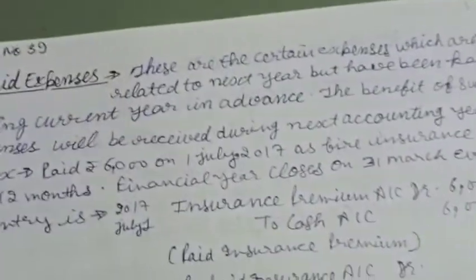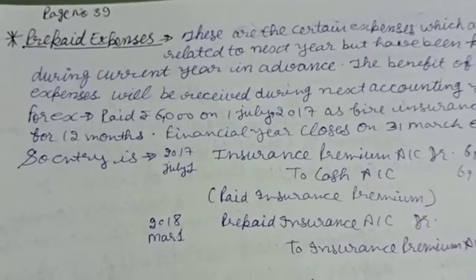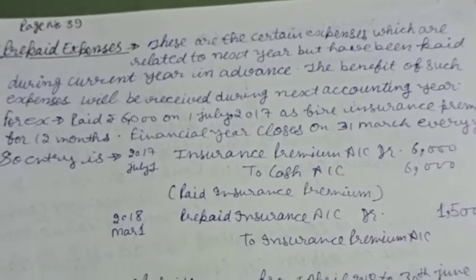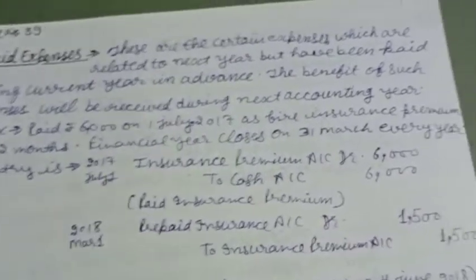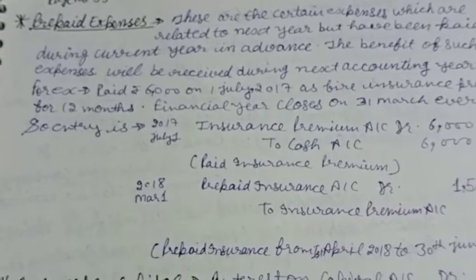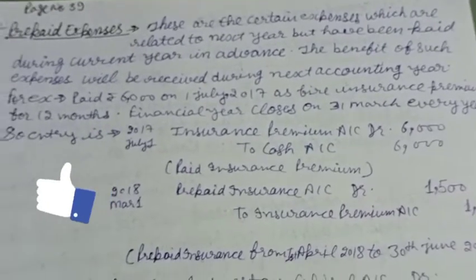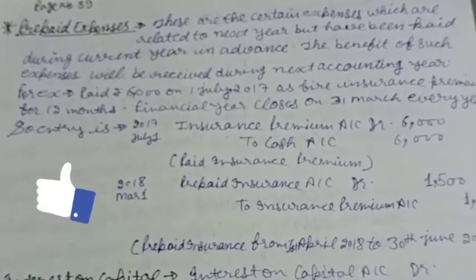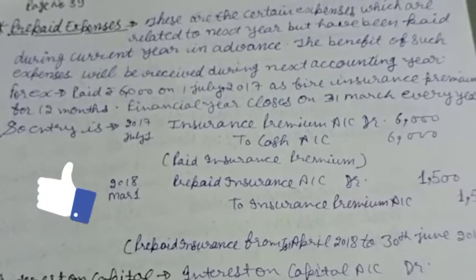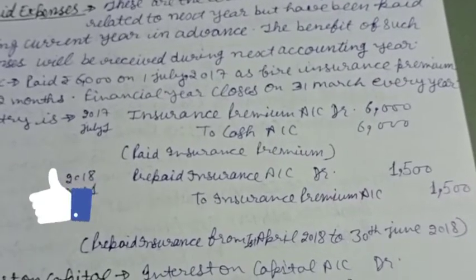Prepaid expenses are certain expenses which are related to the next year but have been paid during the current year in advance. The benefit of such expenses will be received during the next accounting year. For example, six thousand rupees paid on 1st July 2017 as fire insurance premium for twelve months. The financial year closes on 31st March every year. The entry on 1st July 2017 will be: Insurance Premium Account debit to Cash Account six thousand — paid insurance premium.